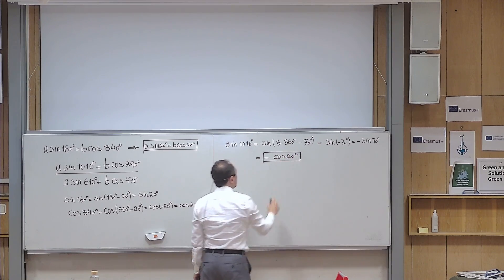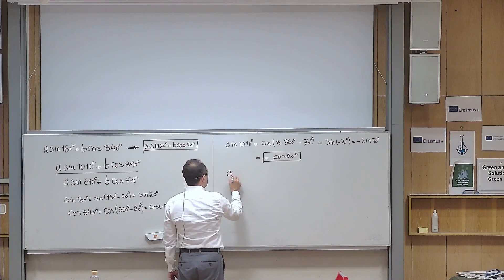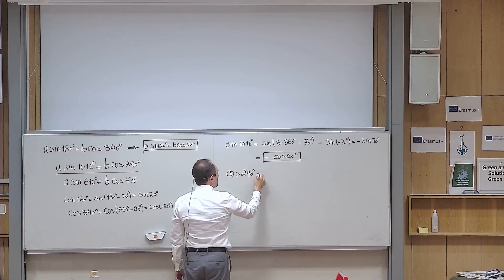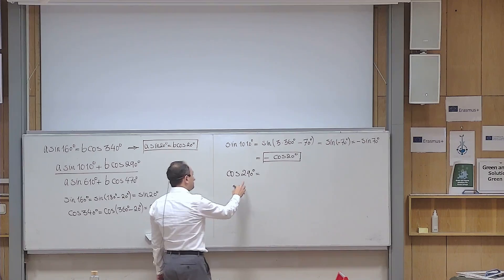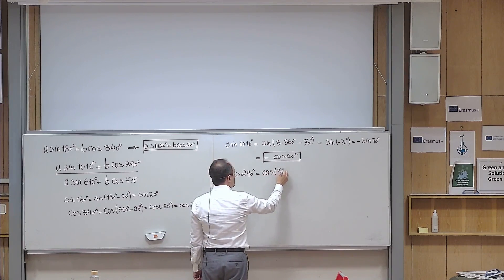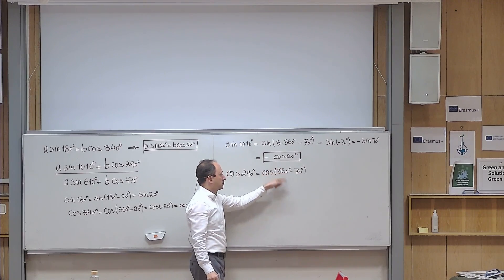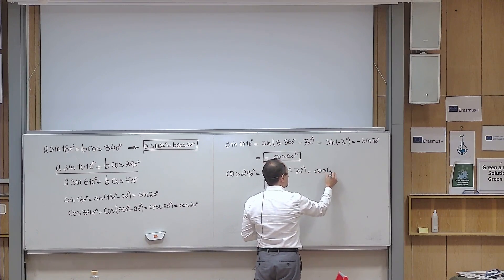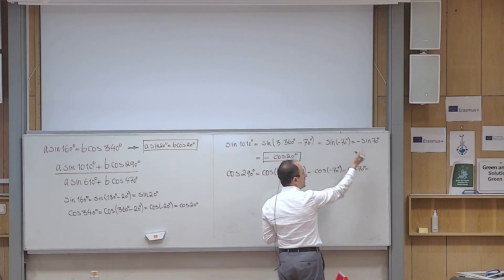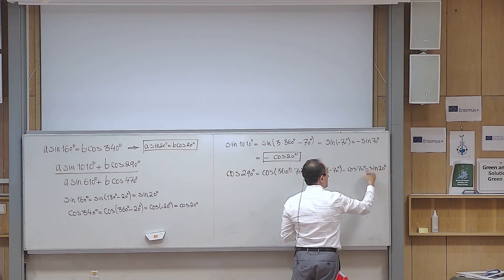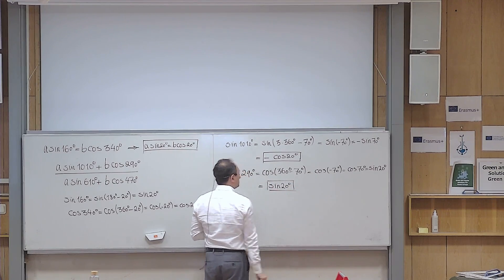The first term is connected to 20 degrees. Now cosine of 290 degrees: I can write it as cosine of 360 degrees minus 70 degrees. Since 360 is the period of cosine, I eliminate it and get cosine of minus 70 degrees. Cosine of a negative angle is cosine of the positive one, so it becomes cosine of 70 degrees. Since 20 and 70 are complementary, cosine of 70 degrees is sine of 20 degrees. So the answer to this second part is simply sine of 20 degrees.